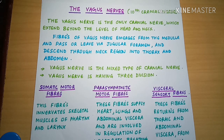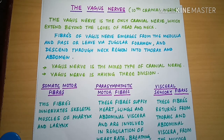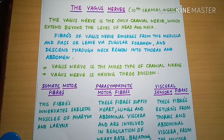It is a mixed type of cranial nerve. The Vagus Nerve has three divisions: Somatic Motor Fibre Division, Parasympathetic Motor Fibre Division, and Visceral Sensory Fibre Division.